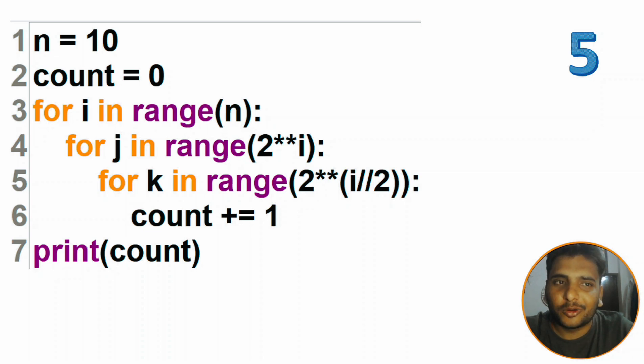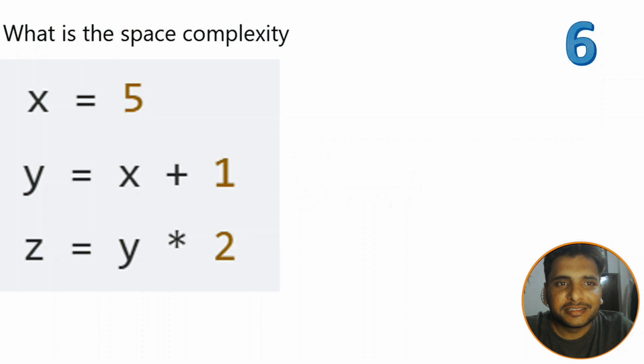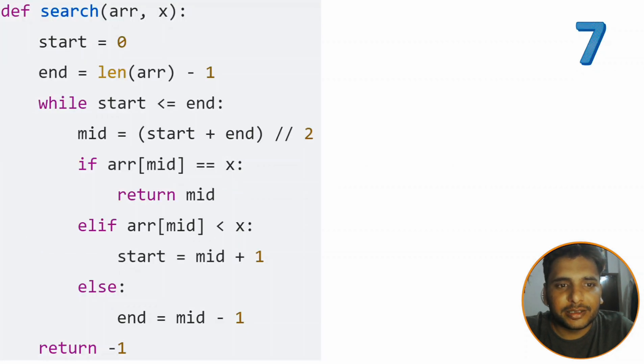Sixth one: this is space complexity, you need to find out. Seventh one: this code seems a little bigger, but once you start practicing and solving this, you can understand how the input value and time complexity is varying.